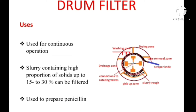Drum filter is used for continuous operation — without hindering the operation we can remove cake. We can process slurry containing a high amount of solids, up to 15 to 30 percent solids, using this filtration equipment. It is also used for preparing penicillin.